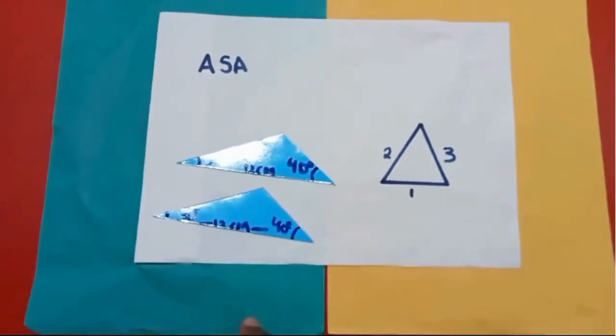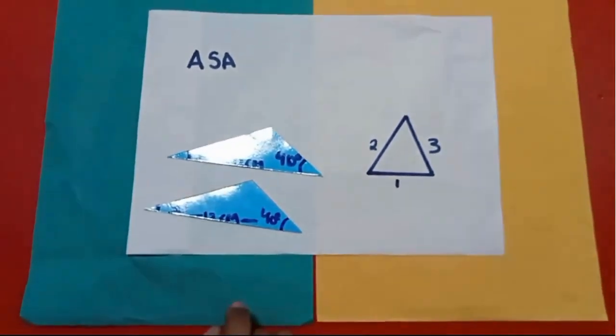I have proved these triangles are congruent by using the ASA method. This is the expression of the ASA congruency rule. Thank you.